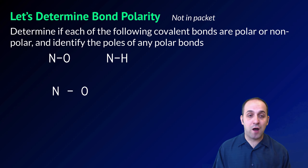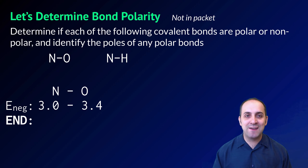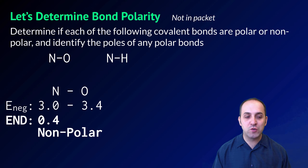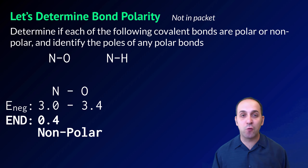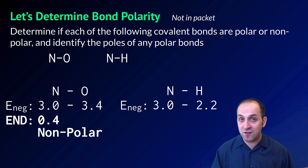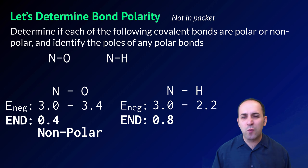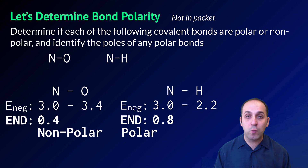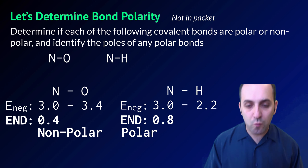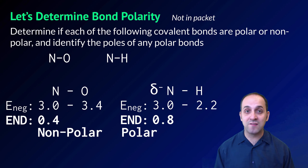Let's do the nitrogen-oxygen bond first. Looking at reference table S, I can get the electronegativity values for these two atoms. The electronegativity of nitrogen is 3.0 and oxygen is 3.4. So the electronegativity difference is 0.4, which makes this a non-polar bond. Neither of these atoms will be partially positive or partially negative — they'll be electrically neutral. If we look at the nitrogen-hydrogen bond, the electronegativity of nitrogen is still 3.0 and hydrogen is 2.2. So the electronegativity difference here is 0.8. Since we're only interested in the difference, we just need the absolute value. 0.8 puts us in the polar region for this bond. As a result, we will have a partially positive and a partially negative pole. Nitrogen is the more electronegative atom, so it's the partially negative pole, and hydrogen is partially positive.